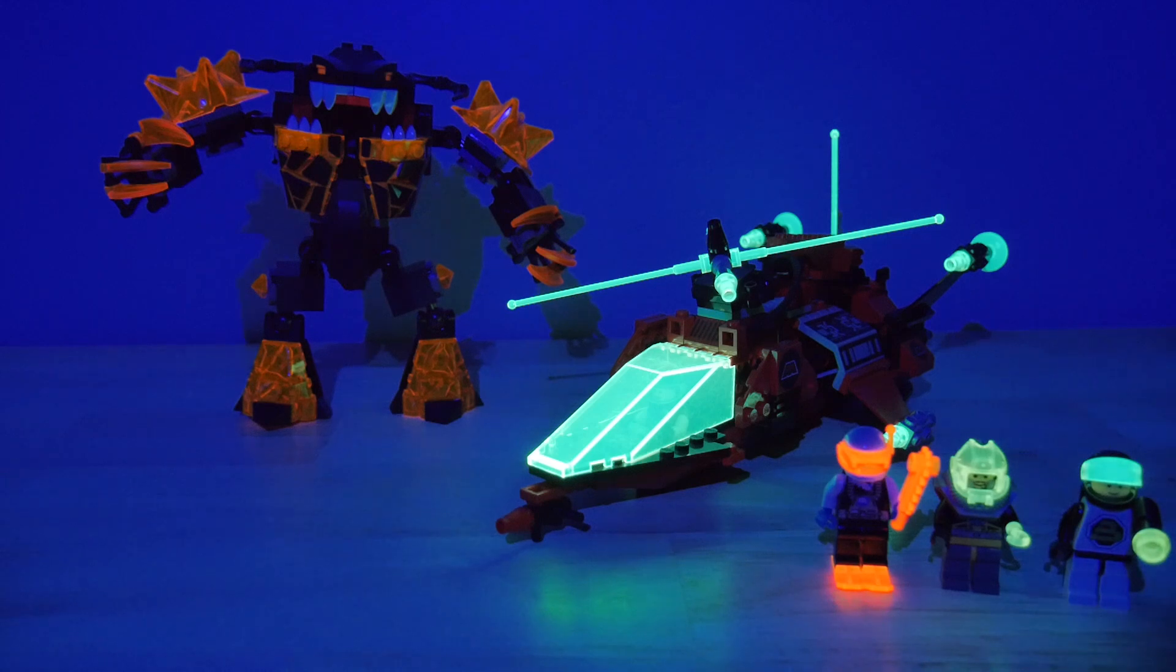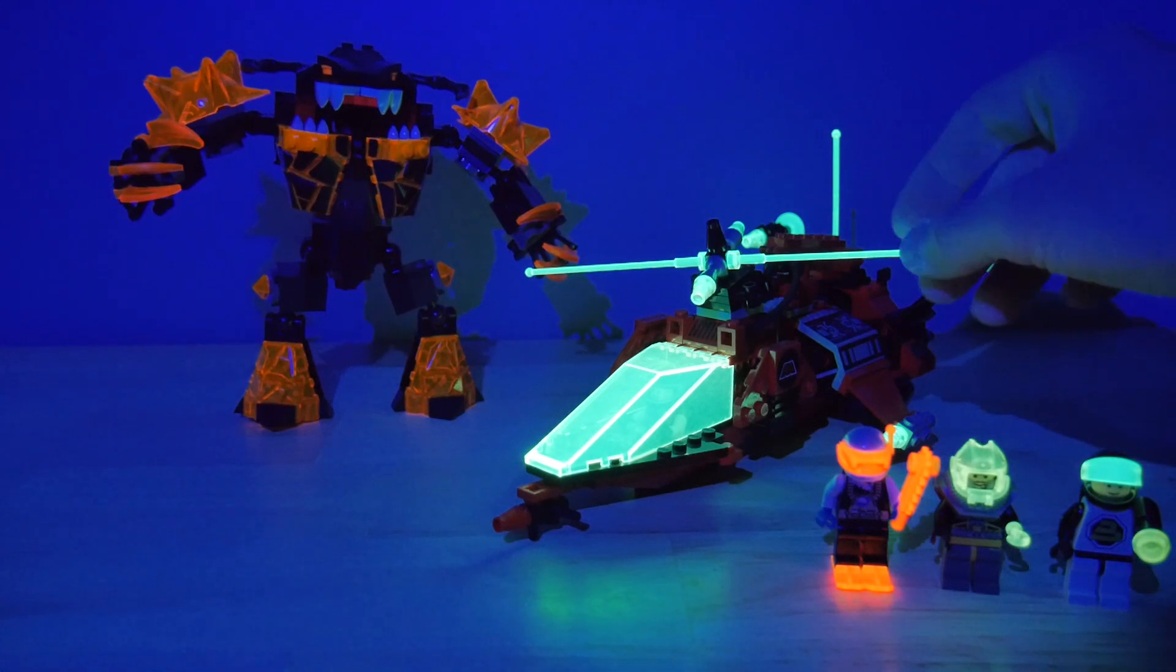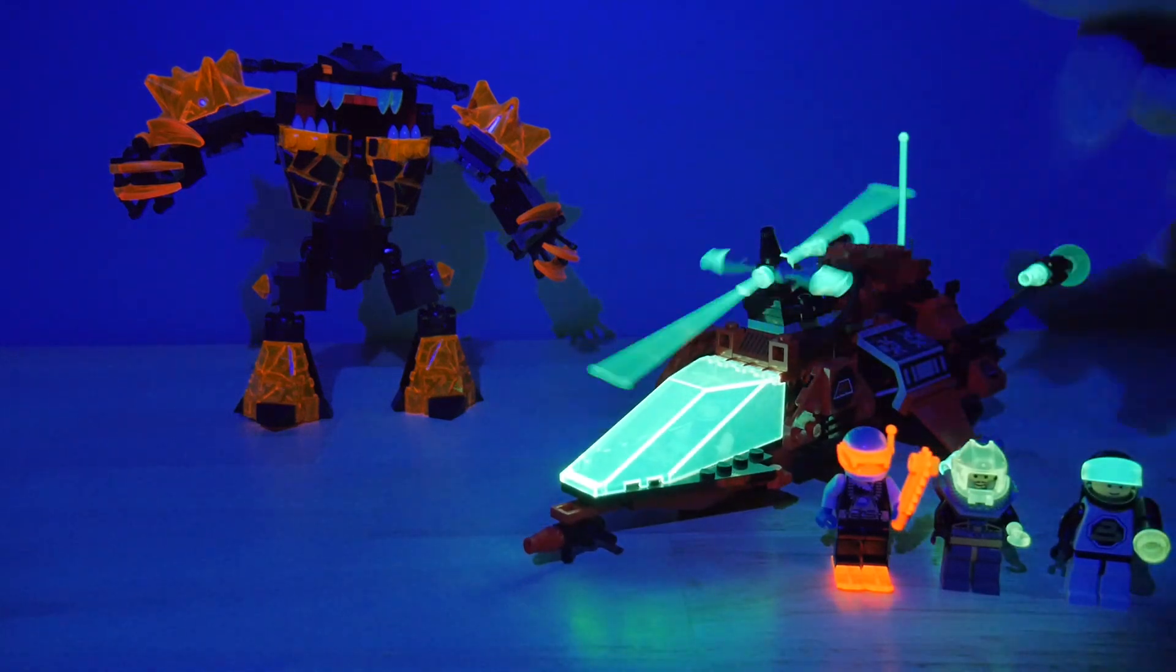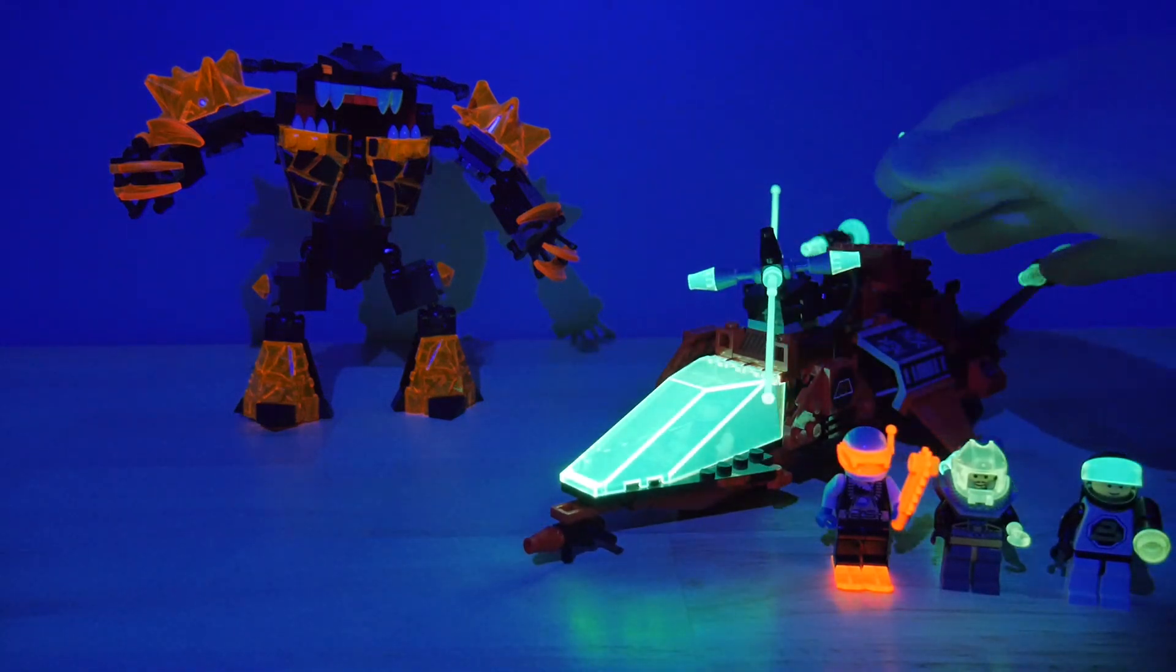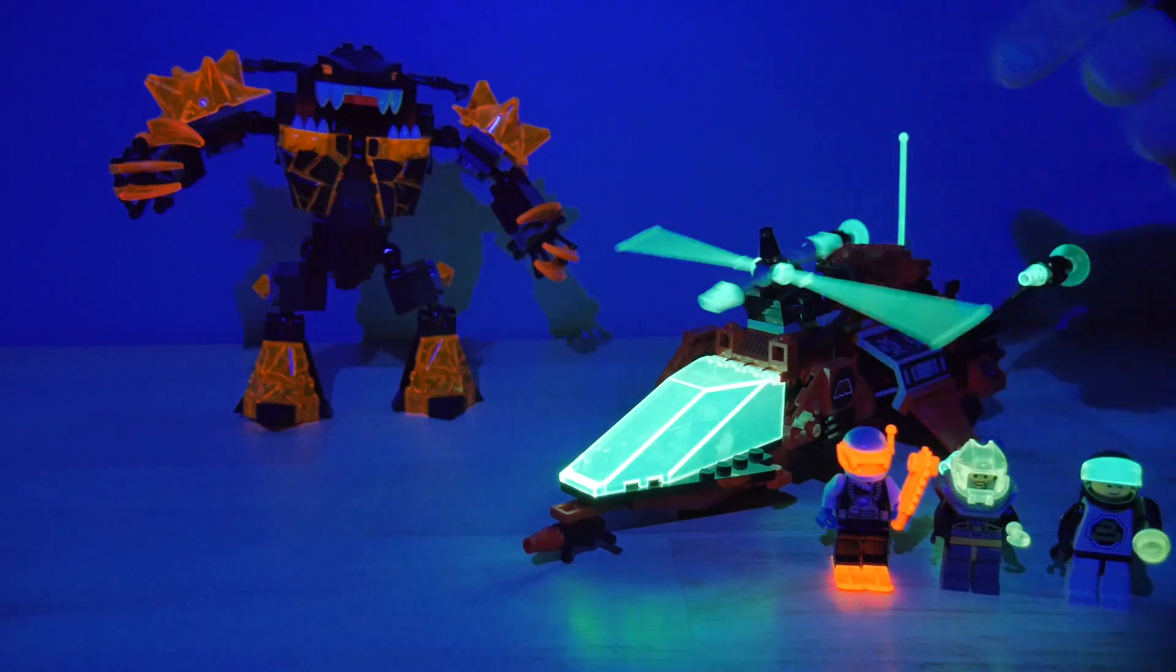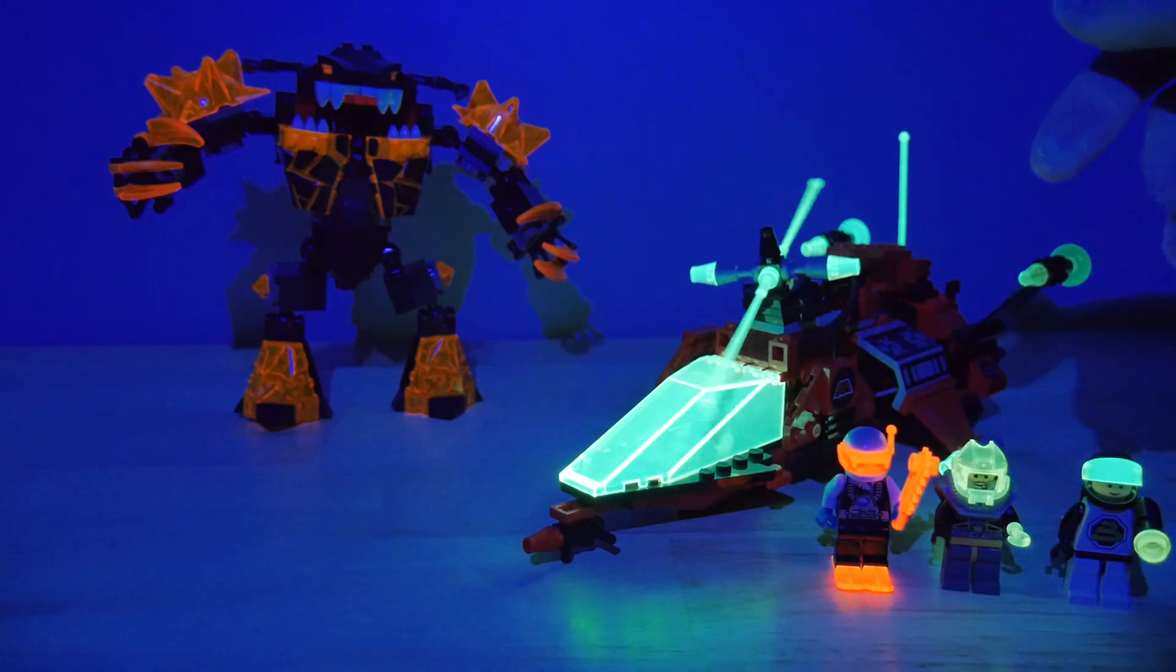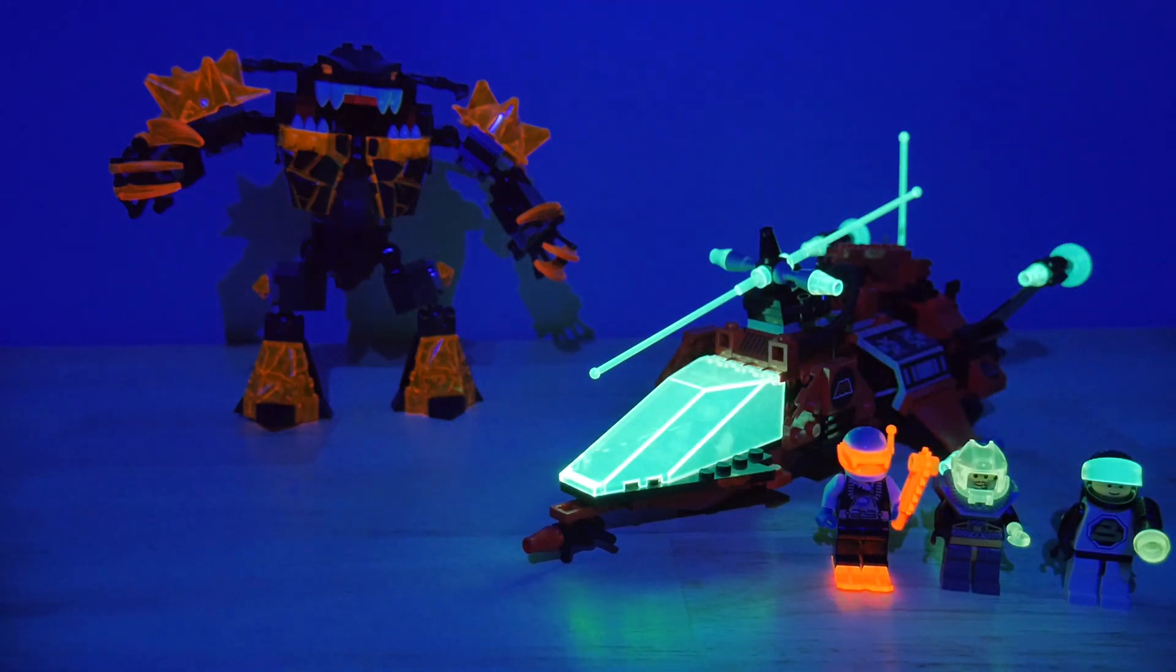So first I have here some of the more obvious glowing pieces, in particular the trans-neon green pieces like you see in this old Emtron set. Obviously this color was made to look like it was glowing even under normal lighting. Most of these parts are not things that glow in the dark in the sense that they charge up and then continue to glow after. They need to be continuously illuminated with some UV to glow.